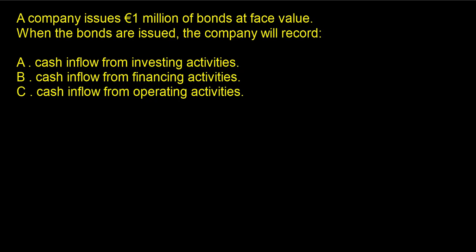This problem states: a company issues 1 million euros of bonds at face value. When the bonds are issued, the company will record — this question is asking whether you know the accounting for this, where the reporting goes. If you're unsure, you can start by eliminating answers.